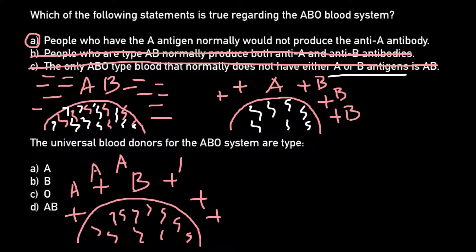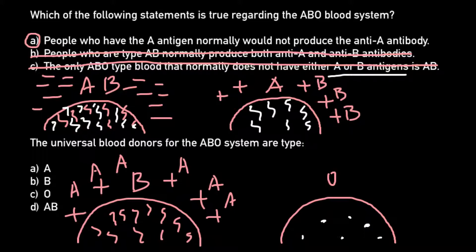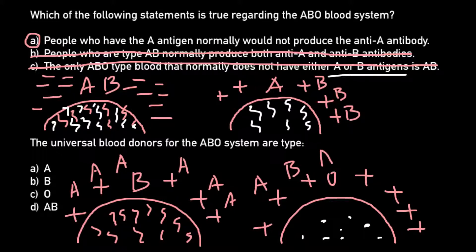The last blood group left is blood group O. On the surface of these red blood cells we would find neither antigen A nor antigen B — instead we find a recessive antigen O. And in the blood serum we would find both antibody A and antibody B.